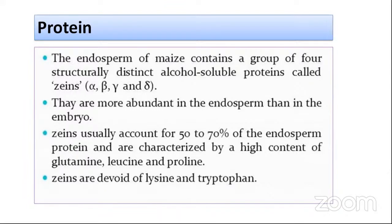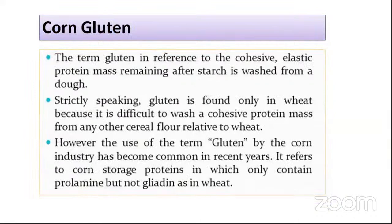The zein proteins are mainly concentrated in the endosperm as compared to the embryo or the bran. They are composed of four fractions of proteins, known by the names alpha, beta, gamma, and theta. Like all cereal proteins, they lack lysine and tryptophan. However, they contain high levels of glutamine, leucine, and proline — this is one of the distinguished features of maize protein.